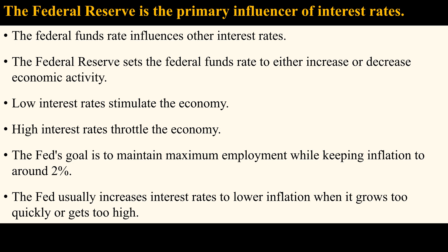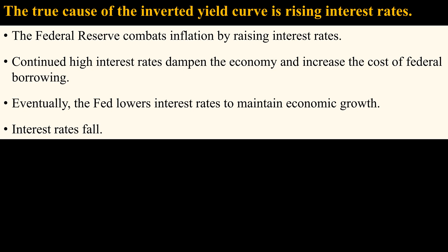The Federal Reserve controls interest rates by controlling the Federal Funds Rate, which is the rate that banks pay or earn by borrowing or lending in the interbank market. The Federal Funds Rate determines all other money market rates and interest rates in general, including the interest rate on mortgages and consumer credit. The Federal Reserve sets the Federal Funds Rate to either increase or decrease economic activity. Low interest rates stimulate the economy; high interest rates throttle the economy. The Fed's goal is to maintain maximum employment while keeping inflation to around 2%. The Fed usually increases interest rates to lower inflation when it grows too quickly or gets too high. Continued high interest rates dampen the economy and increase the cost of federal borrowing, so the Fed starts lowering interest rates to maintain economic growth.